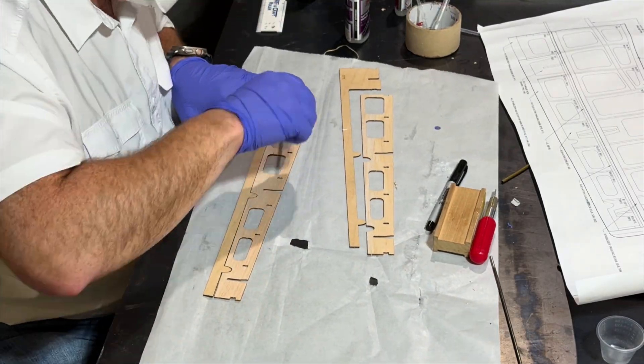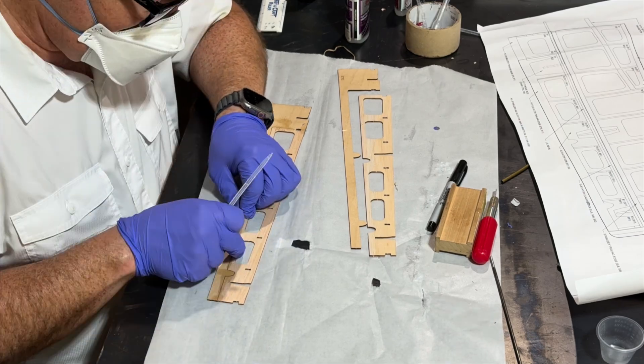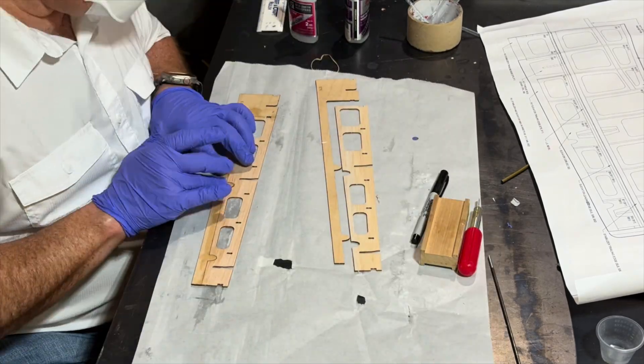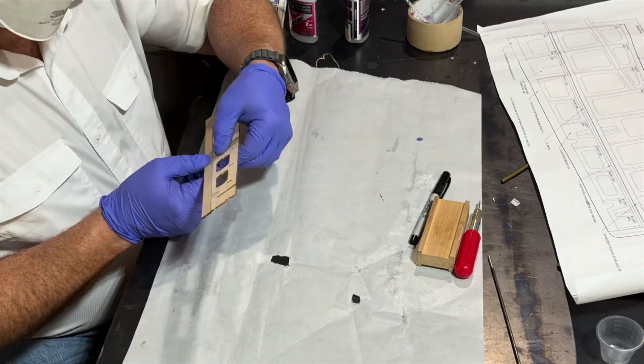So what you're seeing here is we're gluing on the plywood piece to the balsa piece for the elevators. And the plywood piece gives the balsa its stiffness and also creates the trailing edge.